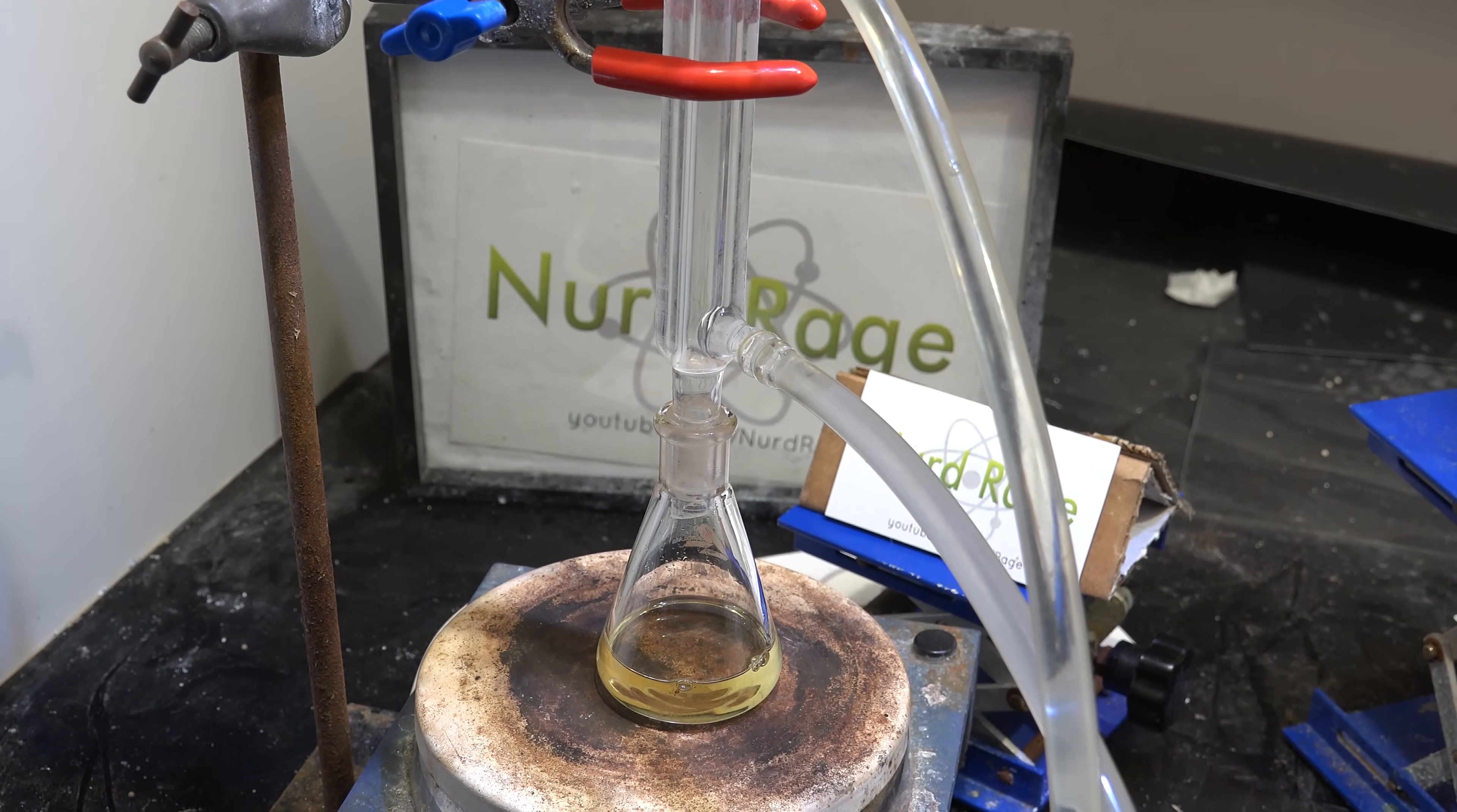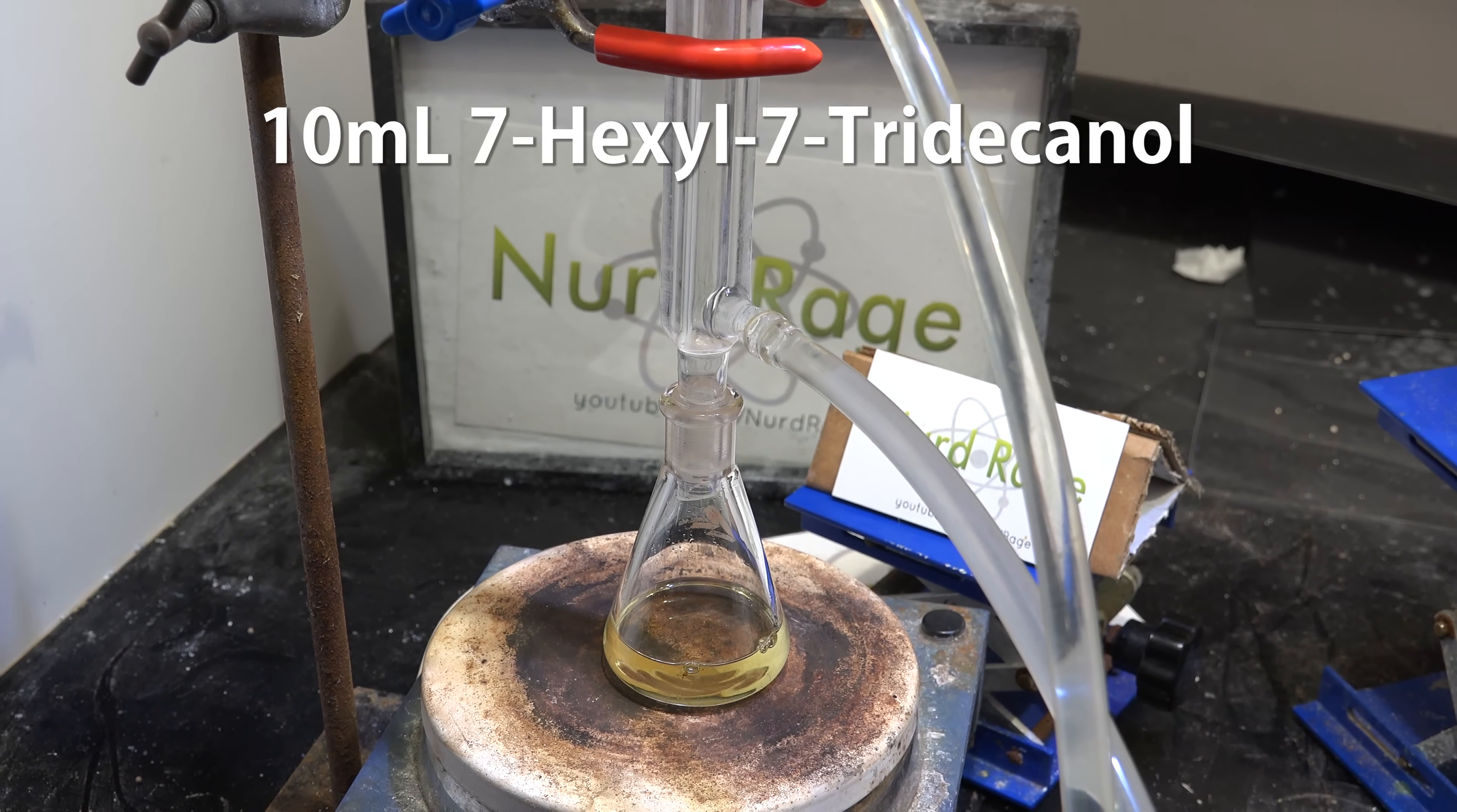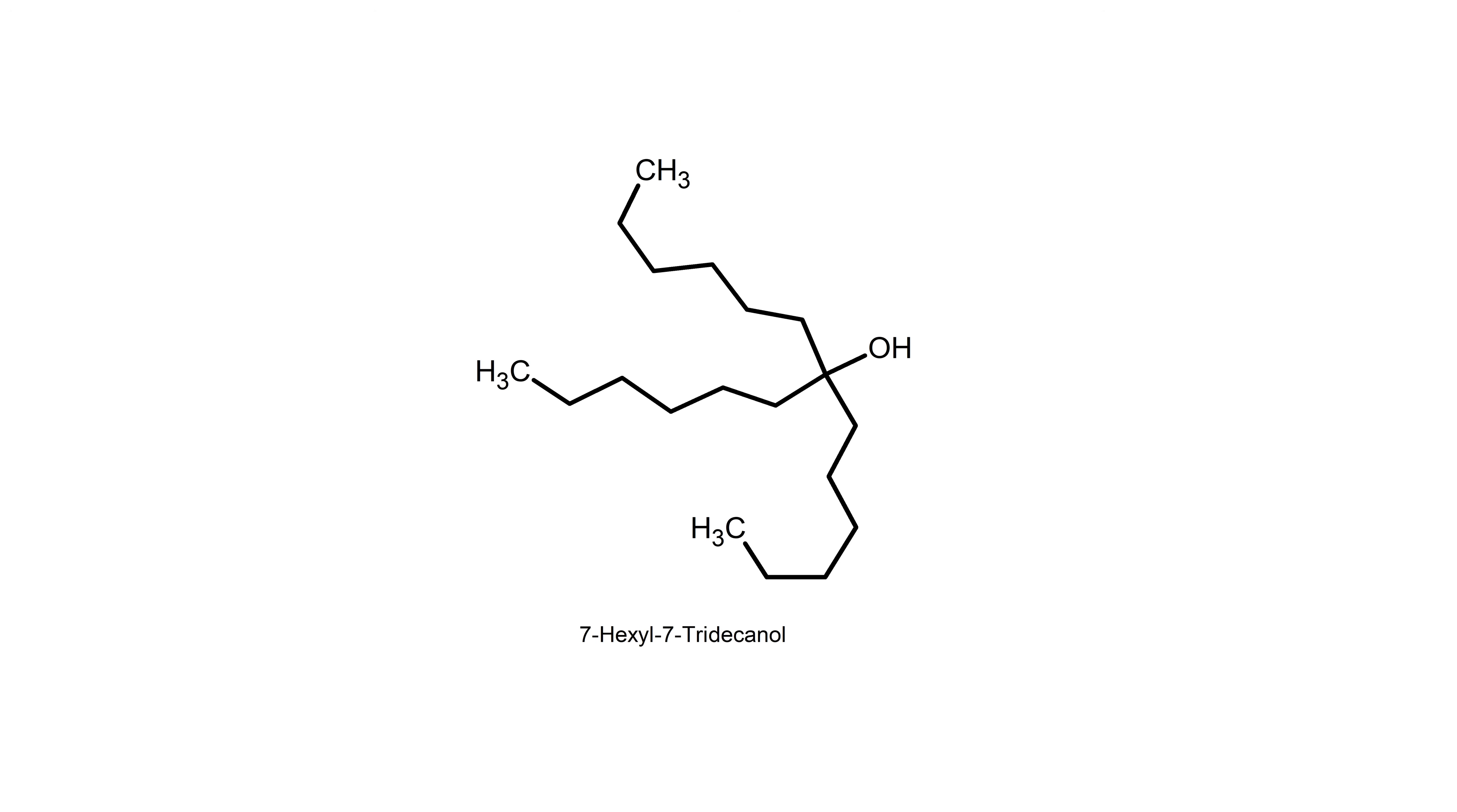So to do this we set up a condenser on a flask with 10 mL of pure 7-hexyl-7-tridecanol. This is a super heavy alcohol that I engineered specifically because it would be the ideal alcohol for this experiment. It's a tertiary alcohol catalyst but at the same time it's so large that it can also serve as a solvent.